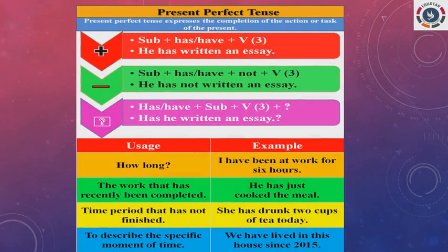Now we will see a quick recap about the present perfect tense. It describes an action that began in the past, continues in the present, or has been just completed. The structure is subject plus has or have plus V3, where V3 indicates the past participle form of the verb. For example, 'He has written an essay.' Here 'written' is the past participle form of 'write' — write, wrote, written.